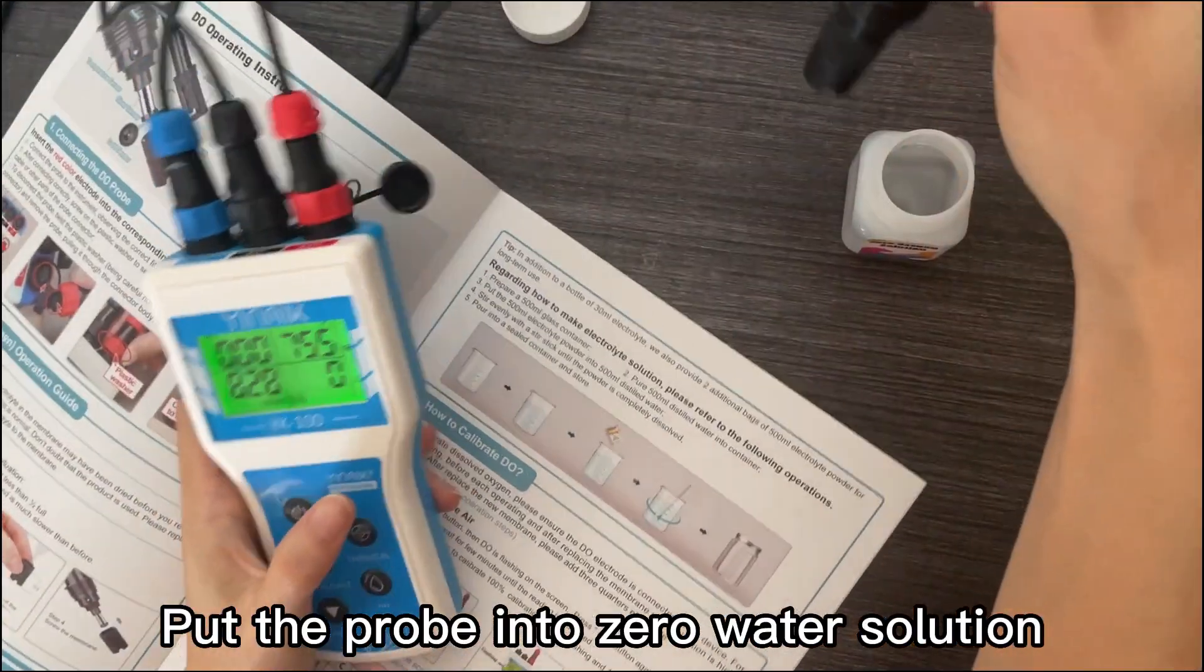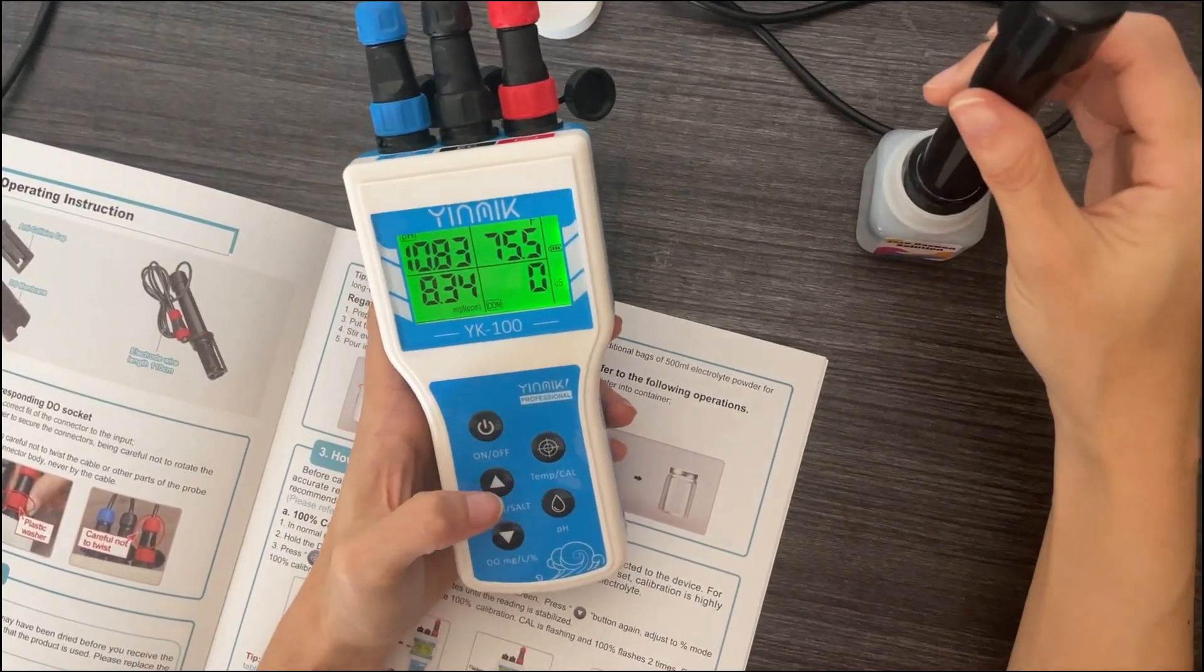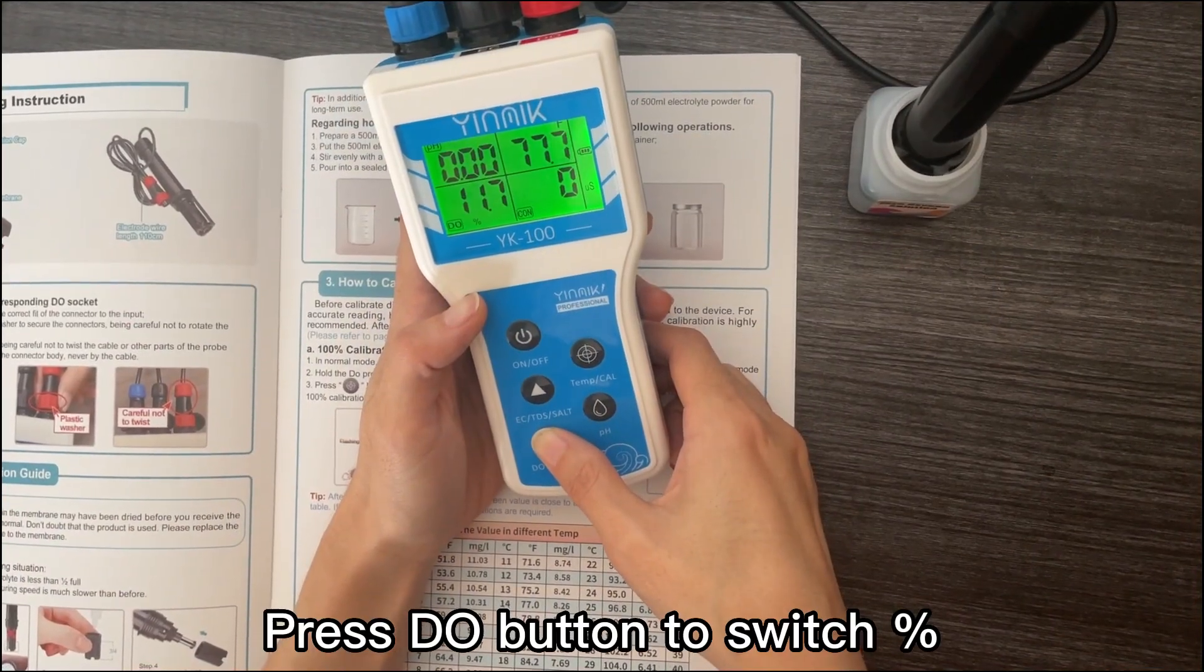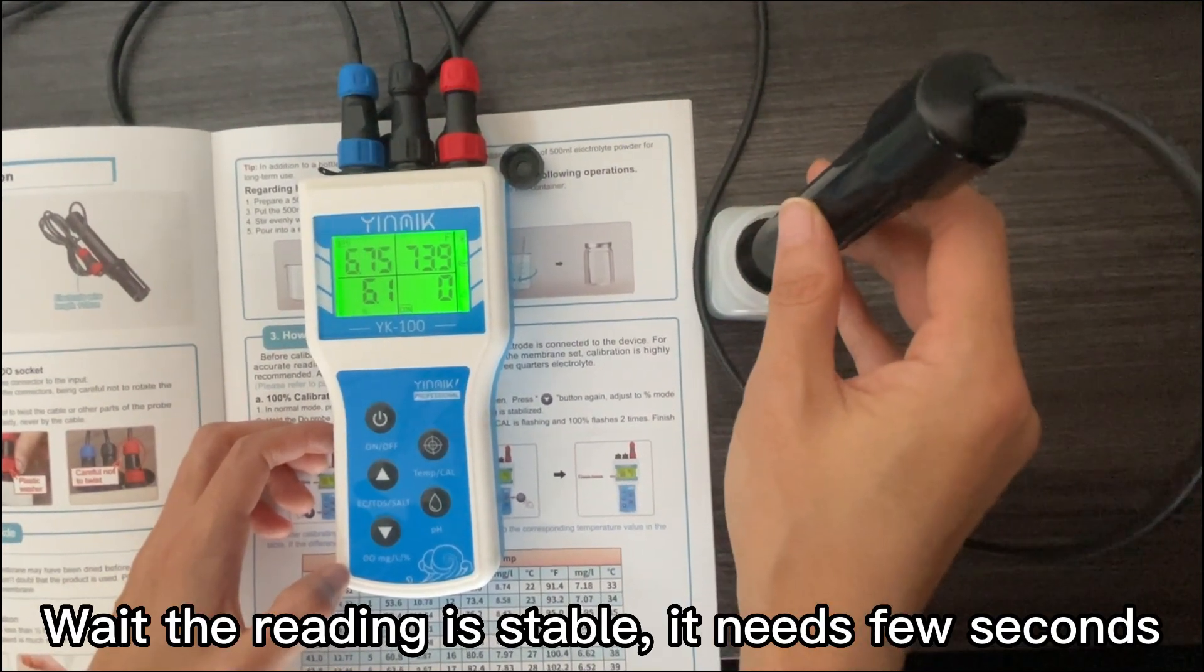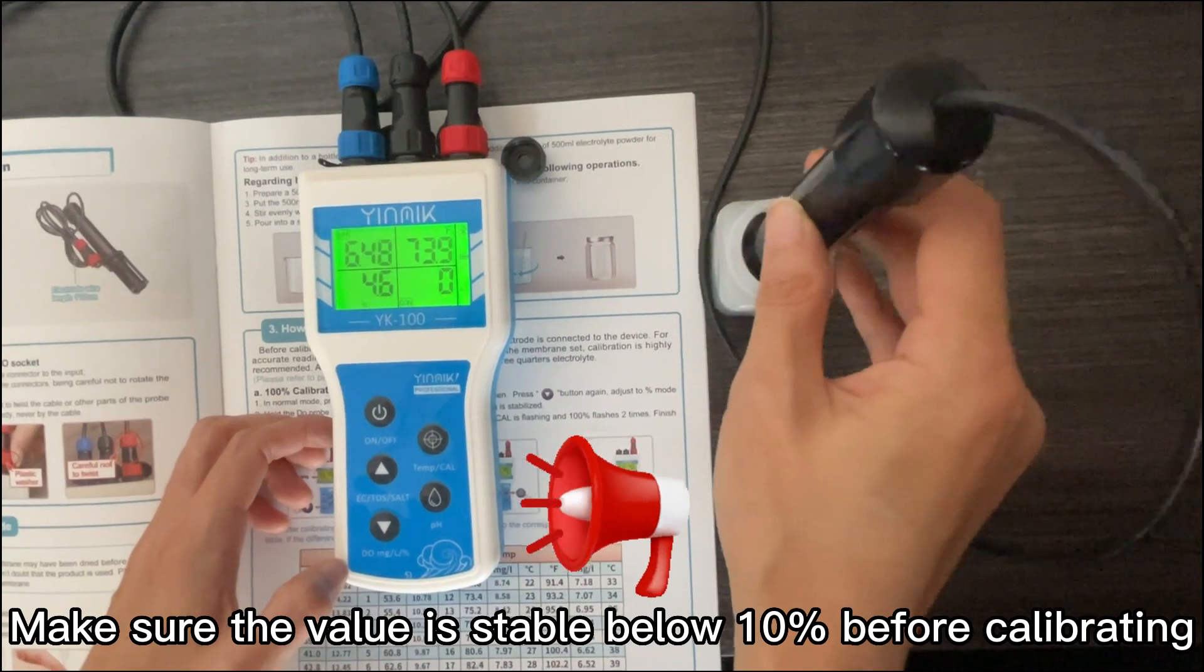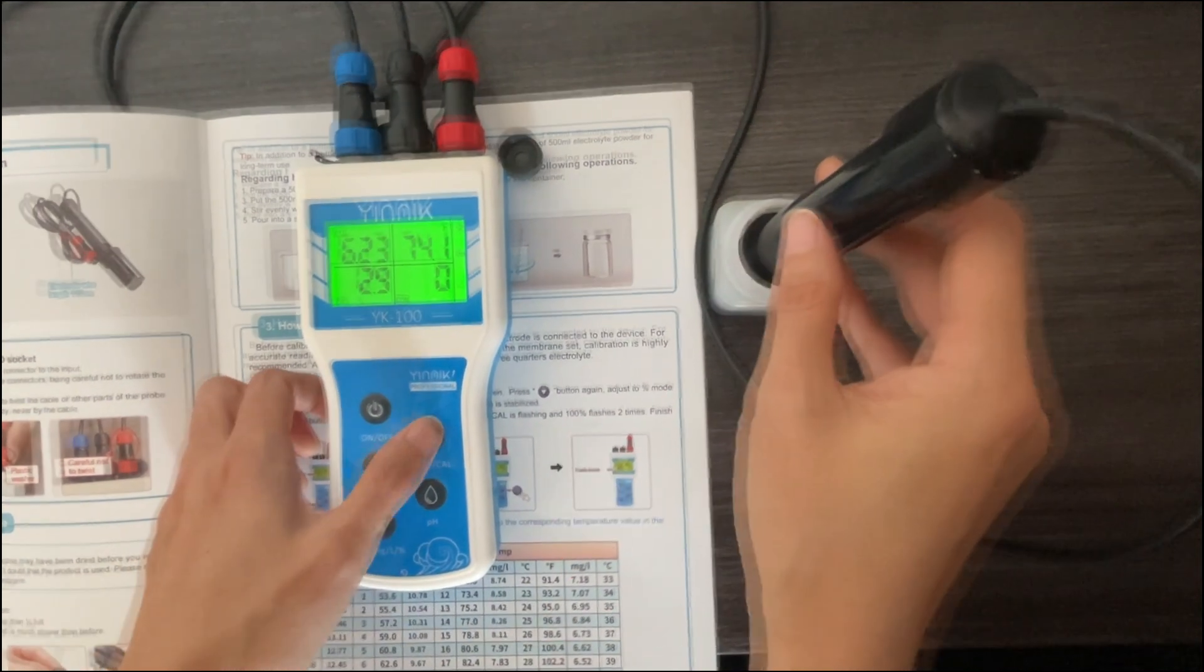Put the probe into zero water solution. Press DO button to switch to percent. Wait until the reading is stable. It needs a few seconds. Make sure the value is stable before calibrating.